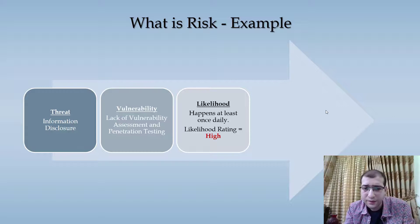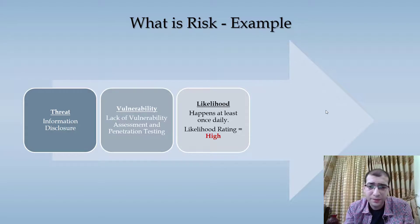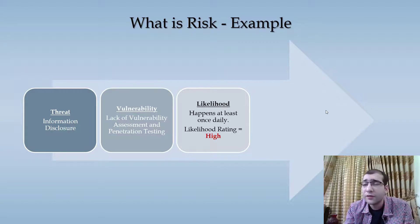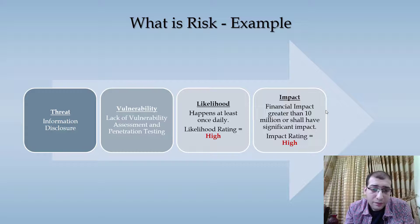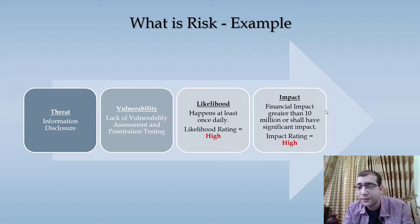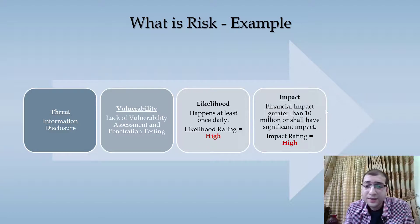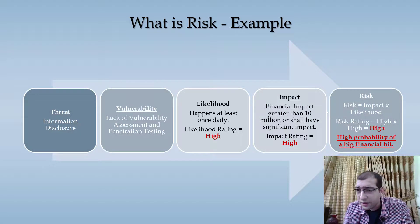For likelihood, we ask how often does this website face this threat. In this example, such attempts which may result in information disclosure happen at least once a day. We have defined a qualitative scale — high, medium, or low — and defined this as high. When this threat exploits this vulnerability, the impact has been determined as a financial impact greater than 10 million, which is more of a quantitative determination. A qualitative determination would be significant impact, and we have rated it as high.